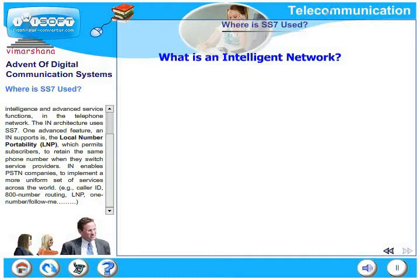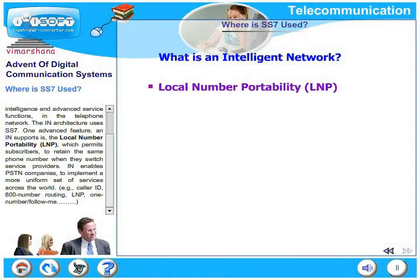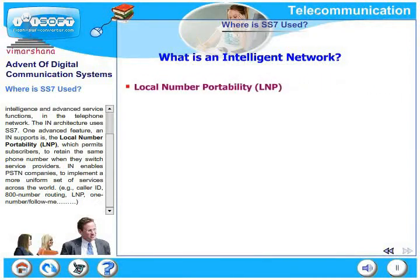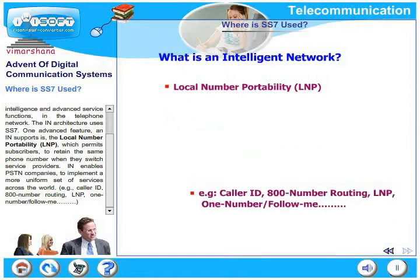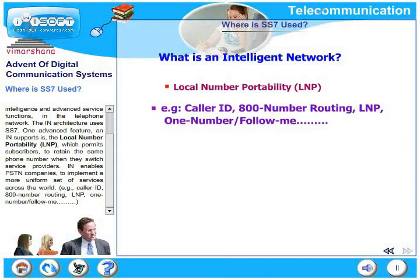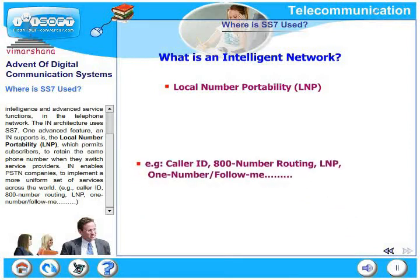One advanced feature an IN would support is local number portability, LNP, which permits subscribers to retain the same phone number irrespective of which service provider they currently belong to. The number you got 10 years back through a particular service provider would be the same number you use today, even if you have switched three service providers. Intelligent network enables PSTN companies to implement a more uniform set of services across the world — examples include caller ID, 800 toll-free number, LNP, and one-number follow-me.